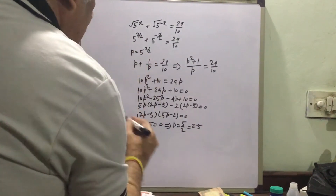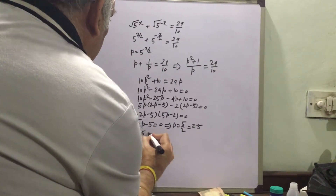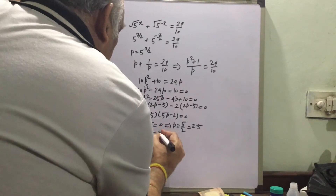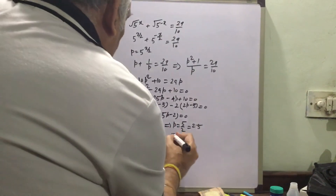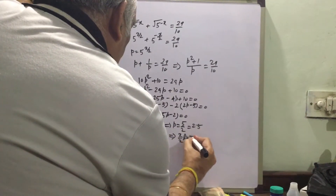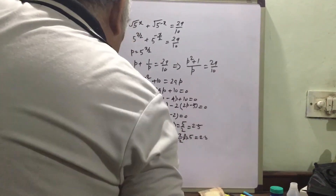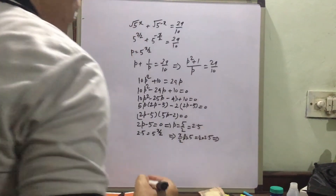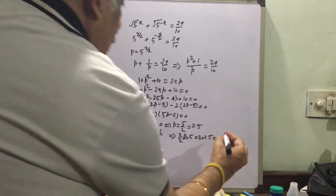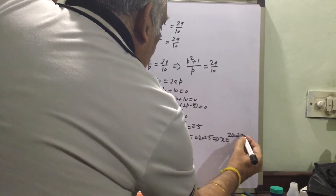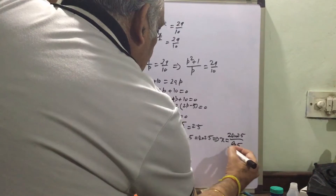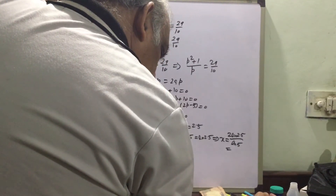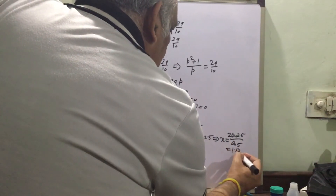So we can write: 2.5 equals 5 raised to the power x/2. So x/2 times log 5 equals log 2.5, giving x equal to 2·log(2.5) divided by log 5, which equals approximately 1.1386.